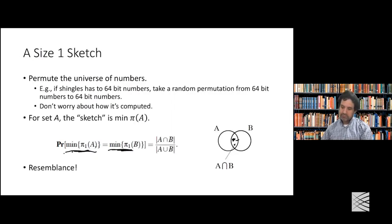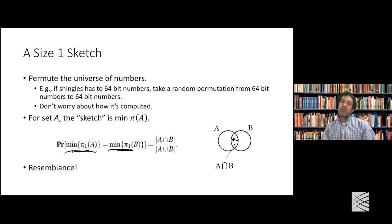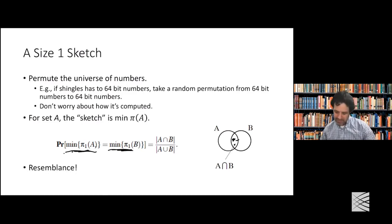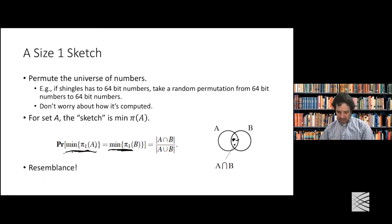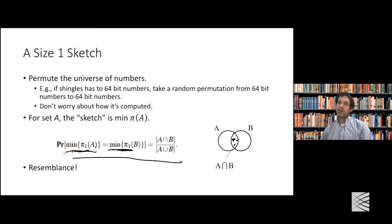Does it have to be a permutation — could you just apply a regular hash function? If it's not a permutation, there's the possibility of extra collisions where two different things map to the same value. You can turn non-permutation hash functions into permutation hash functions, and that's not a big loss. The theoretical work we were doing was looking at how to construct families of permutations — and it turns out they don't have to be completely random permutations, they just need to have this minwise independence property.